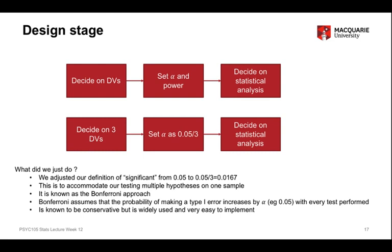The Bonferroni approach assumes that the probability of making a type 1 error increases by alpha — say 0.05 — with every test which we perform. So it assumes a linear increase in the total probability of type 1 error across all the tests we conduct. The true increase is probably not as large as alpha multiplied by the number of tests performed. But it is a very widely used approach for a small number of tests like 2, 3, or 4, where it's probably not terribly conservative. And it is, of course, very easy to implement.